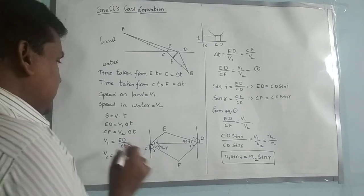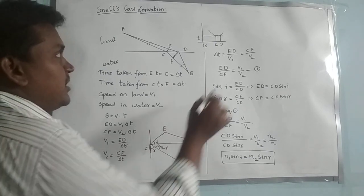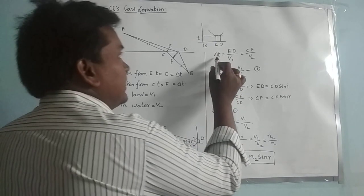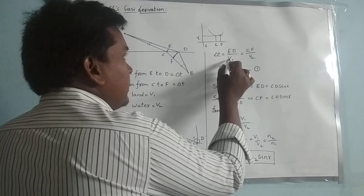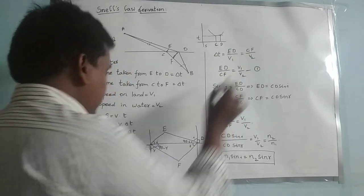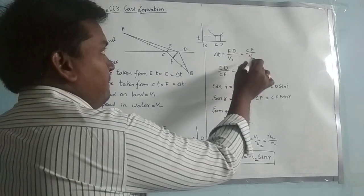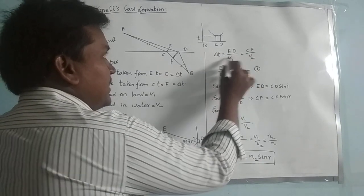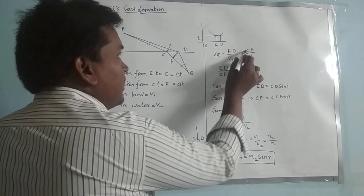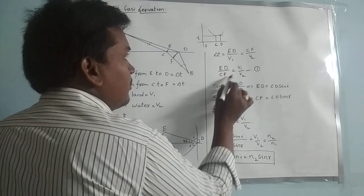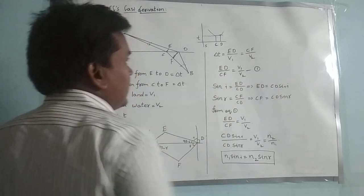Since the time is equal, delta T can be written as ED by V1, which equals CF by V2. So by comparing these two, we can write: ED by CF equals V1 by V2. Consider this as equation 1.